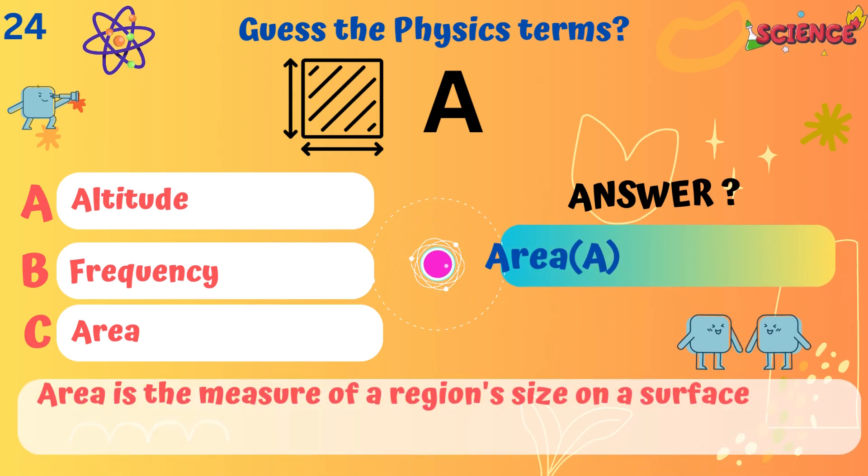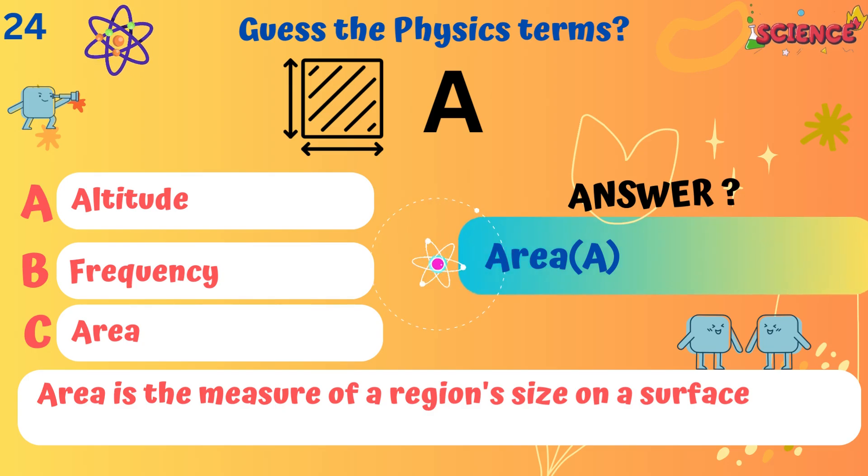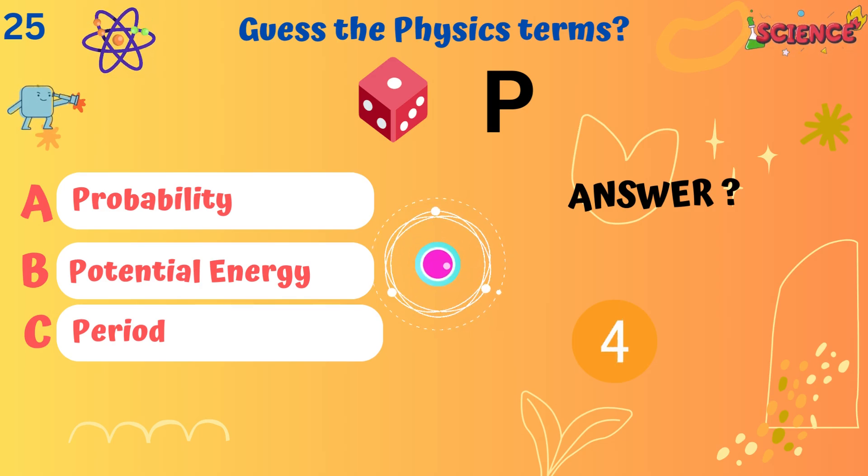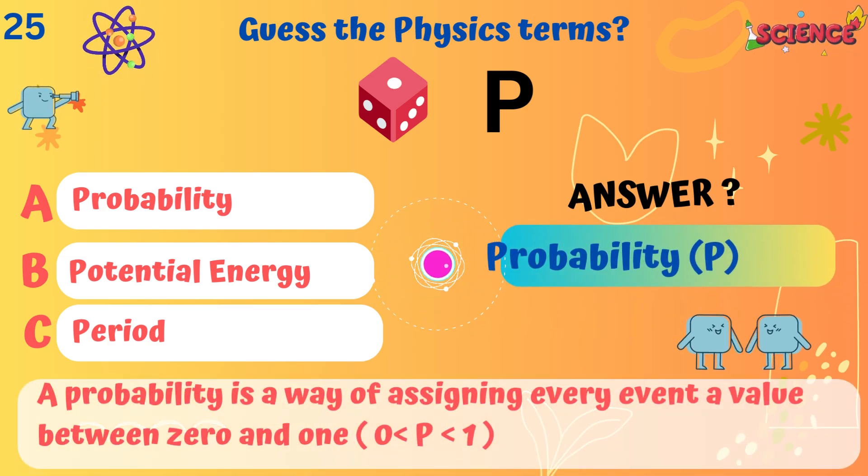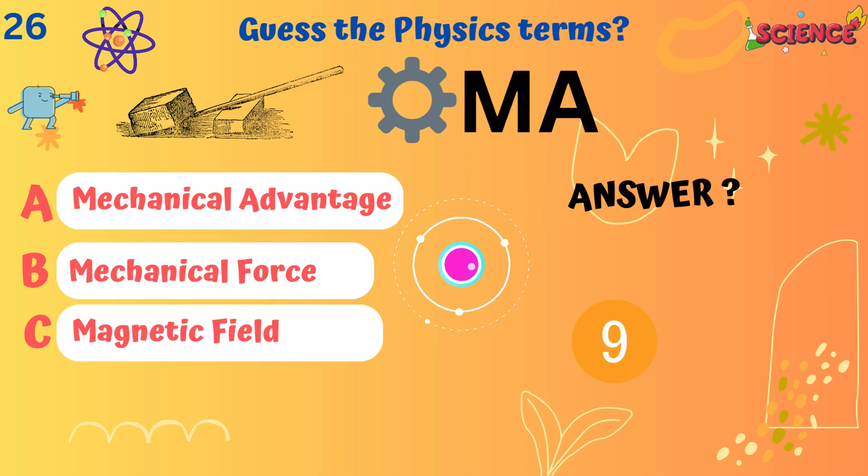Area. Area is the measure of a region size on a surface. Probability. A probability is a way of assigning every event a value between 0 and 1.